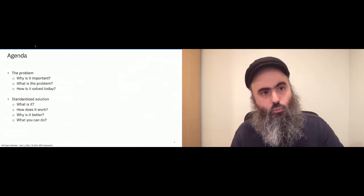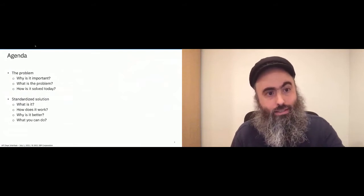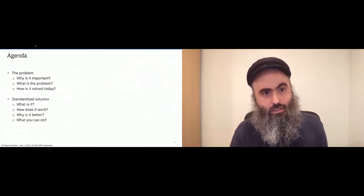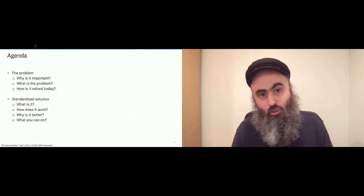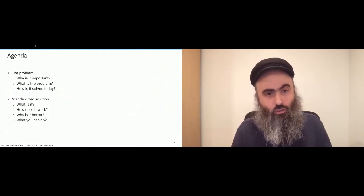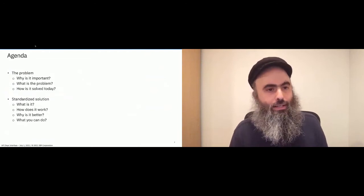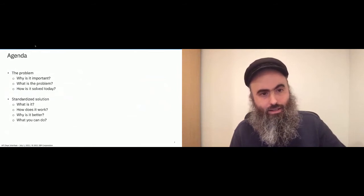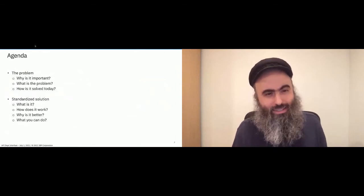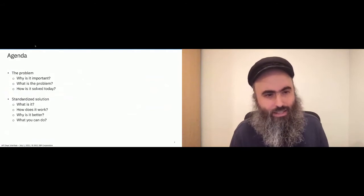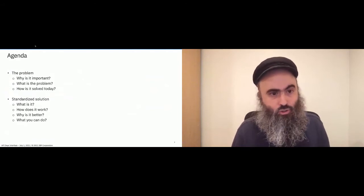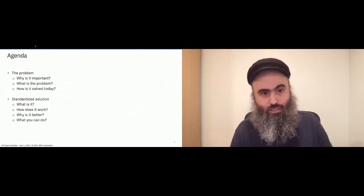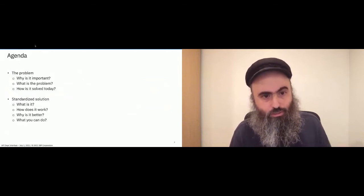I want to start with setting up what's the problem and why is it important — what specifically is the problem that exists today. How have people already solved it? Every major GraphQL public endpoint solved it in their own way. Then taking a look at the standardization of the spec: what is it, what are some details, how exactly does it work, why is that a better situation, and what can you do to help with your endpoint or your product?